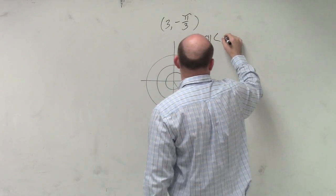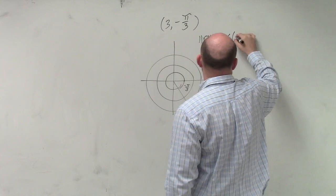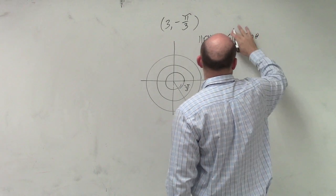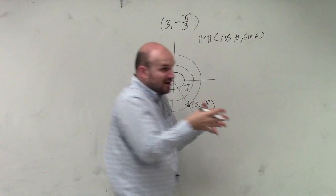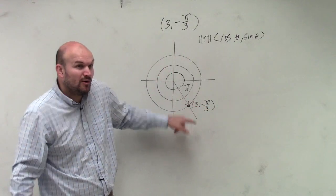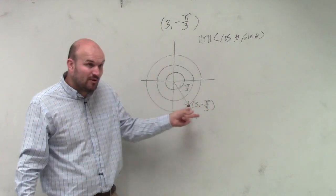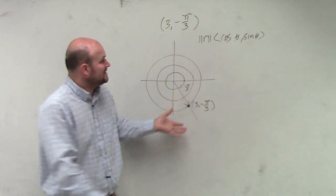our vector would be r times cosine of theta times sine of theta. And what's nice about that is whatever our vector is, that's going to give us our terminal point. And that's what we're looking for, is the terminal point. We're not really talking about vectors. I'm just relating it to what you've already done.